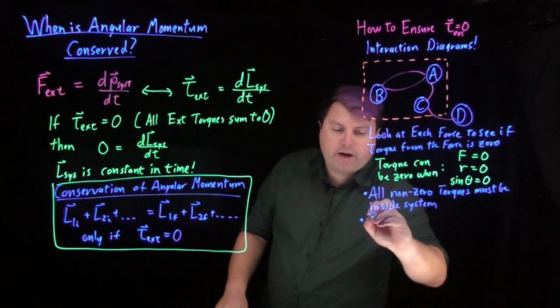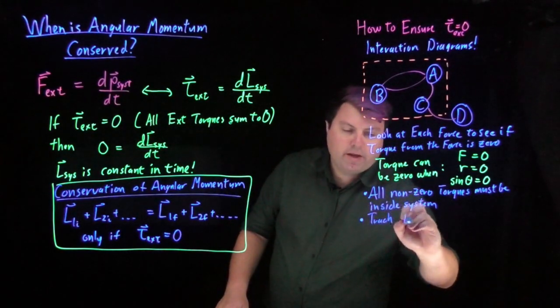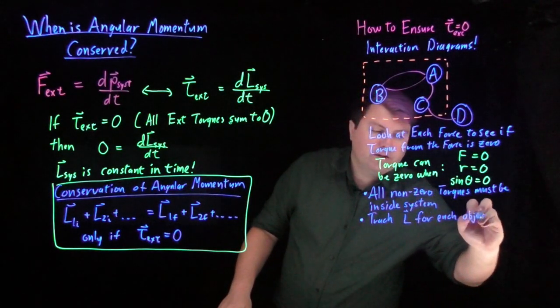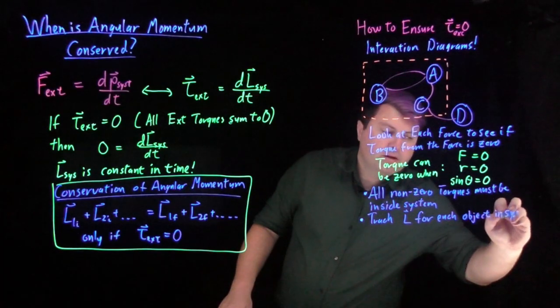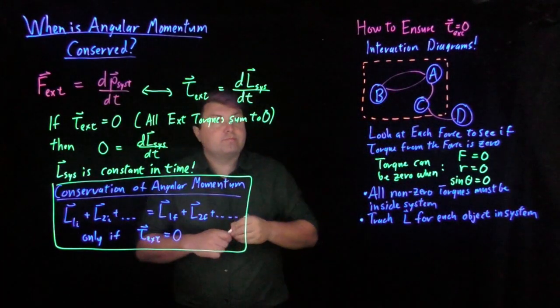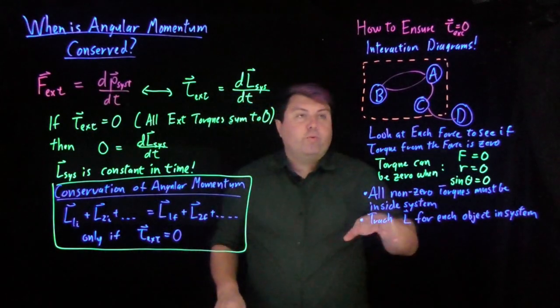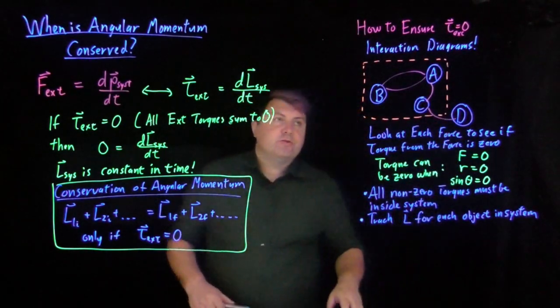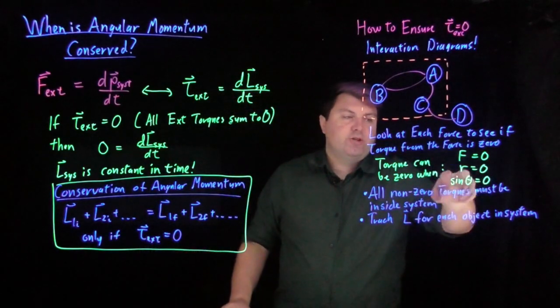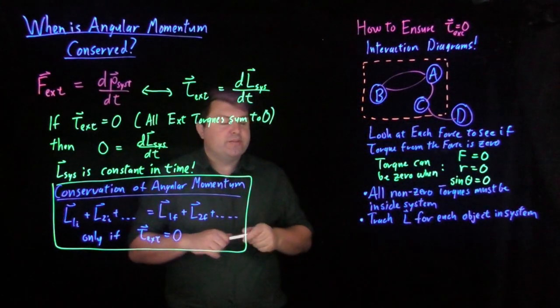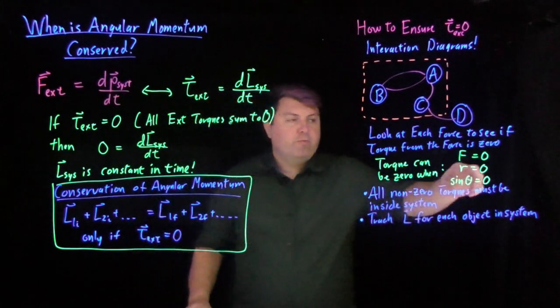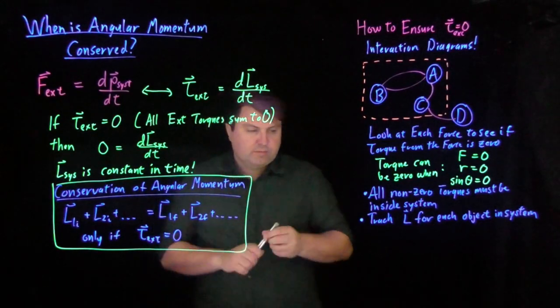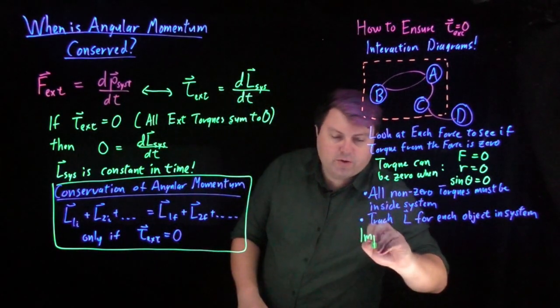And then we need to track the angular momentum for each object in the system. So we choose an interaction diagram where we don't have any external torques, and any external forces we can justify that they have a zero torque where the force, radius, or sine of the angle gives us zero.